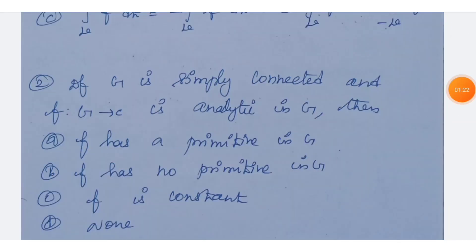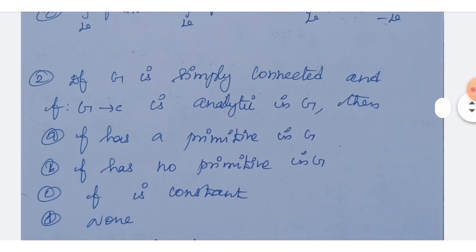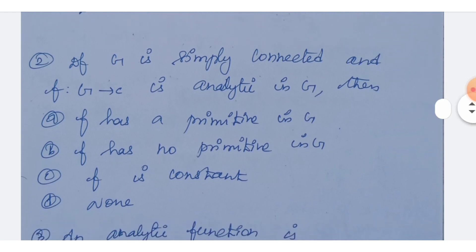Next question: if G is simply connected and f from G to C is analytic in G, then which option is correct? Option A: f has a primitive in G. Option B: f has no primitive in G. Option C: f is constant. Option D: none of the above.